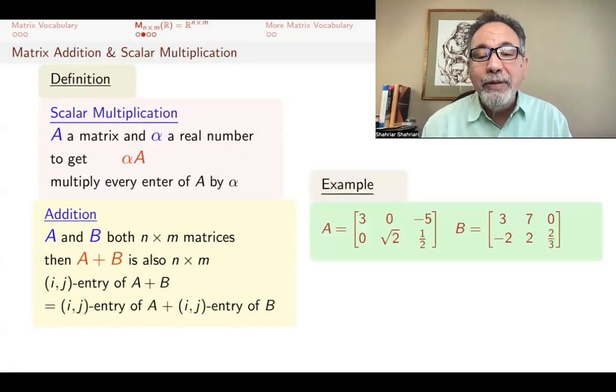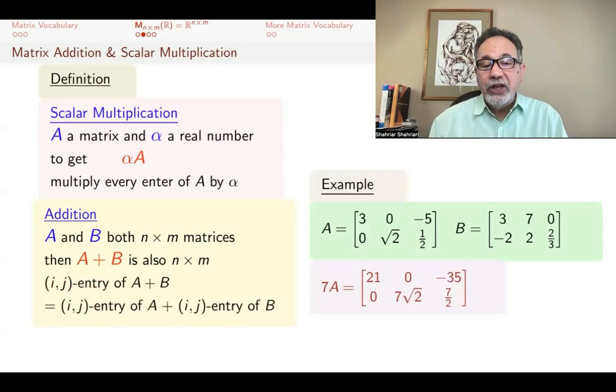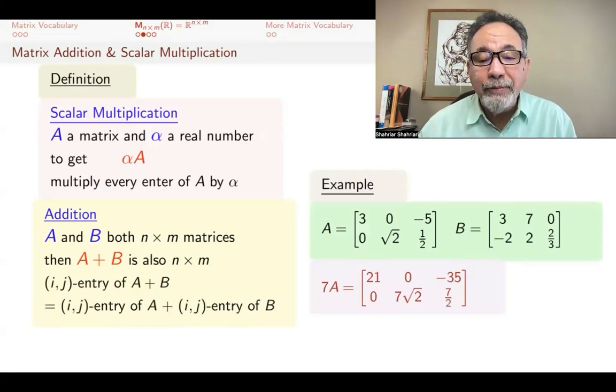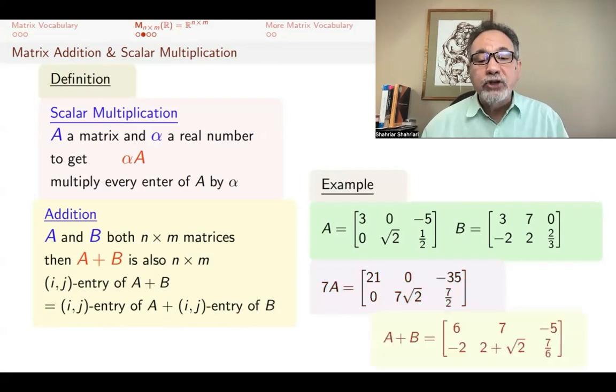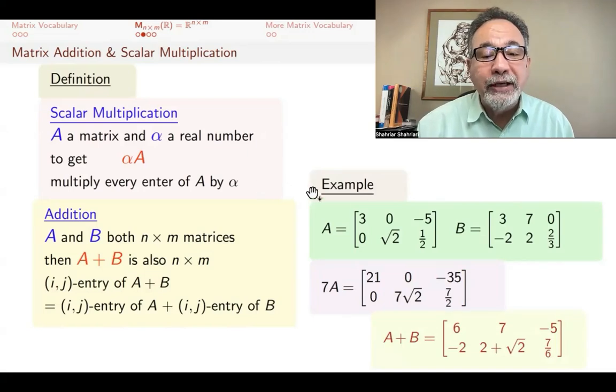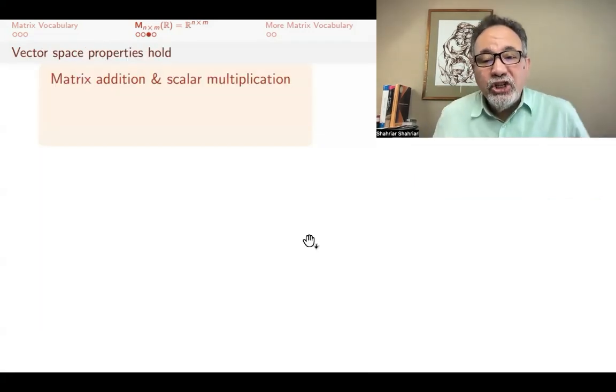For example, if A is this 2 by 3 matrix and B is that other 2 by 3 matrix, then 7A, you just take every entry of A and multiply it by 7. Instead of 3, you get 21, and so on. And A + B is also a 2 by 3 matrix, and you get that by adding the corresponding elements. So the 3 and the 3 add up to 6, and so on.